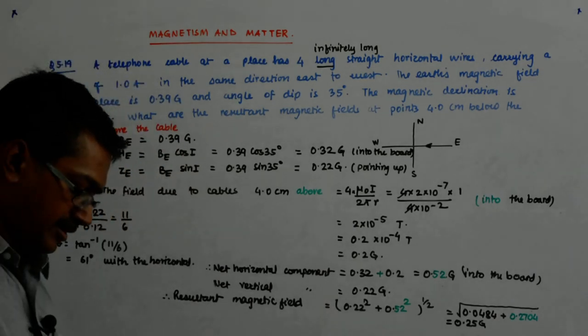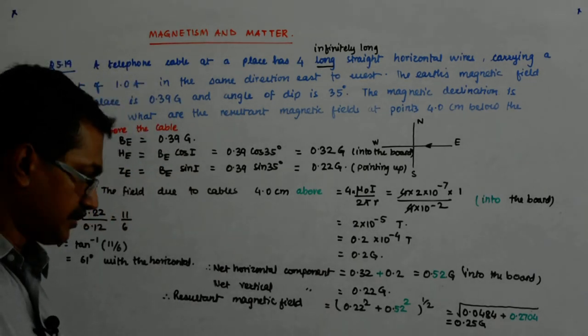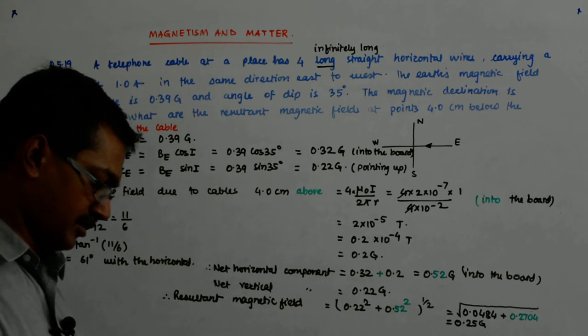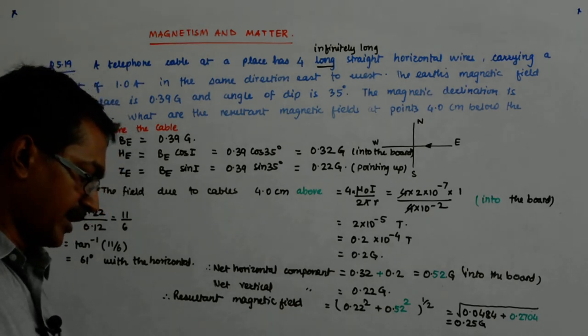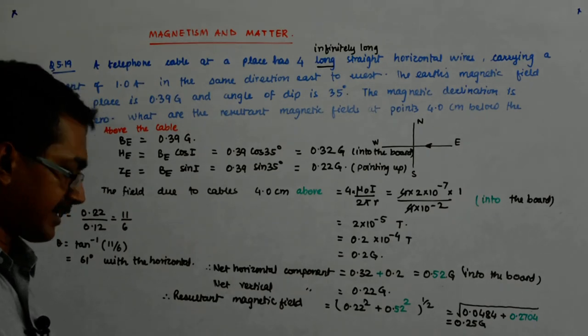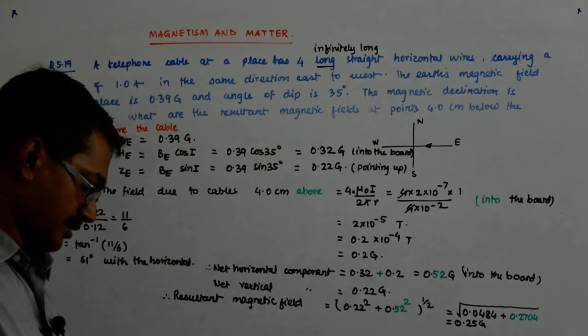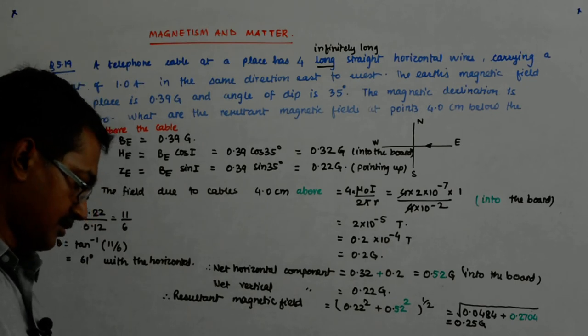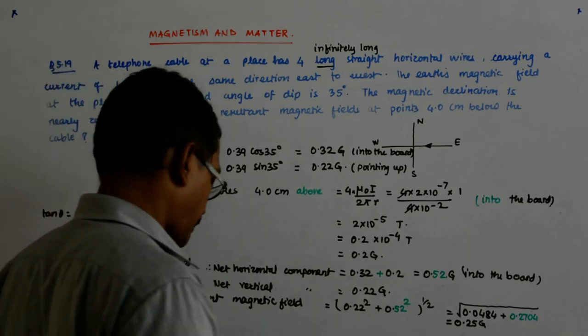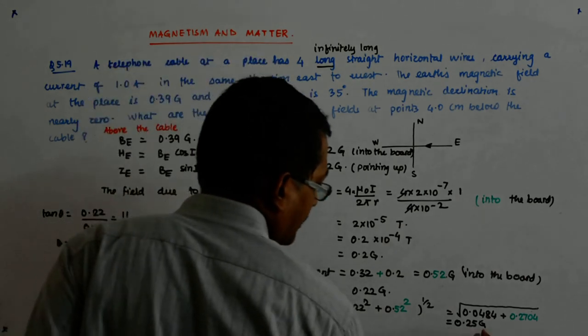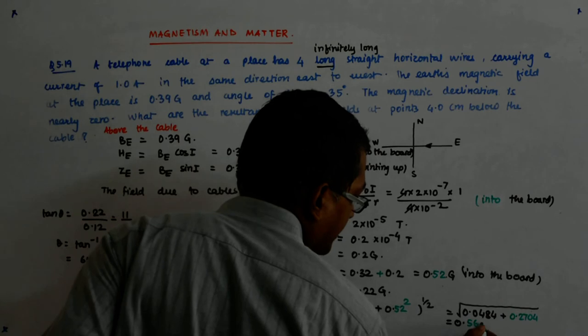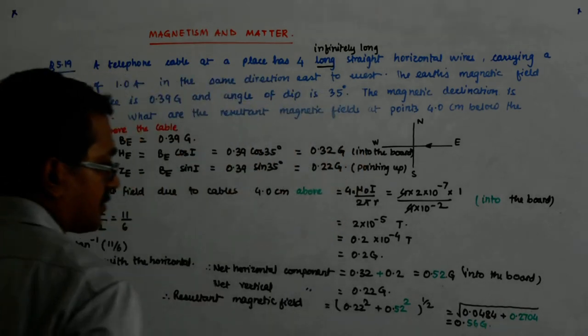And this plus 0.0484 gives me 0.3188 and root of that is 0.564. So this is equal to 0.56 Gauss. Fine.